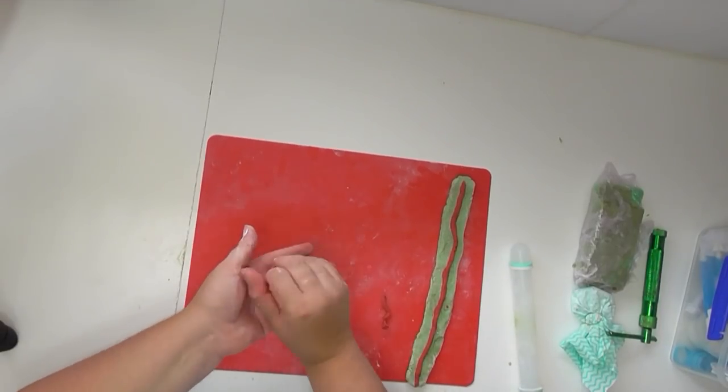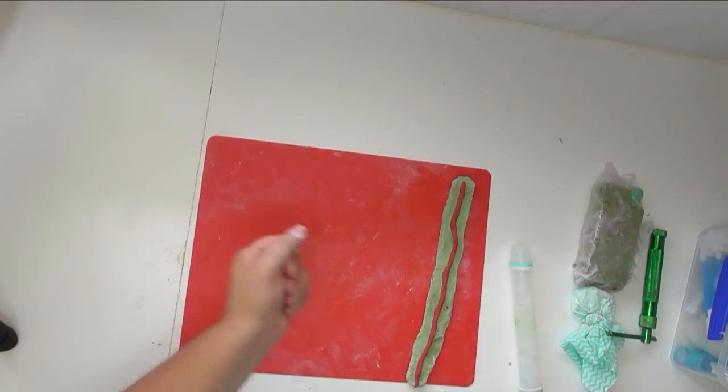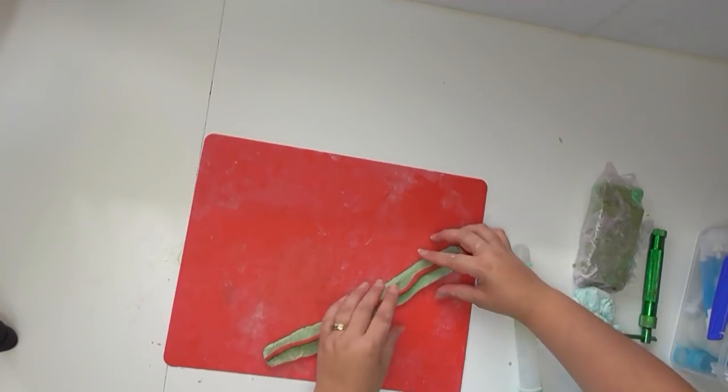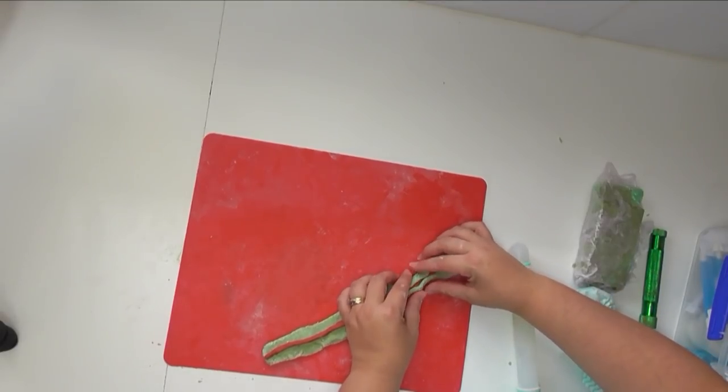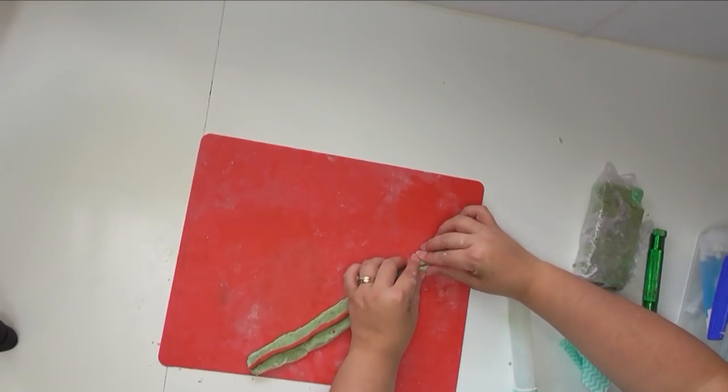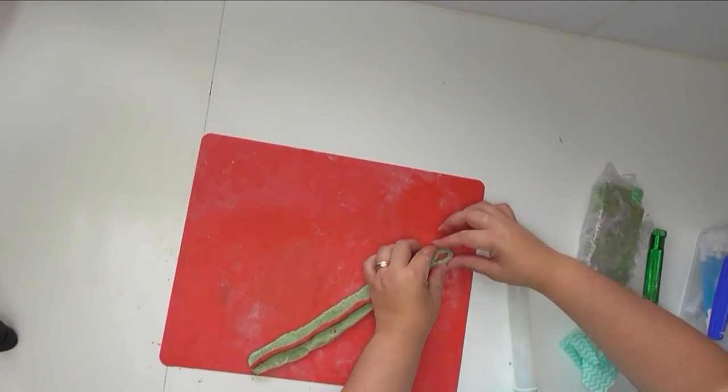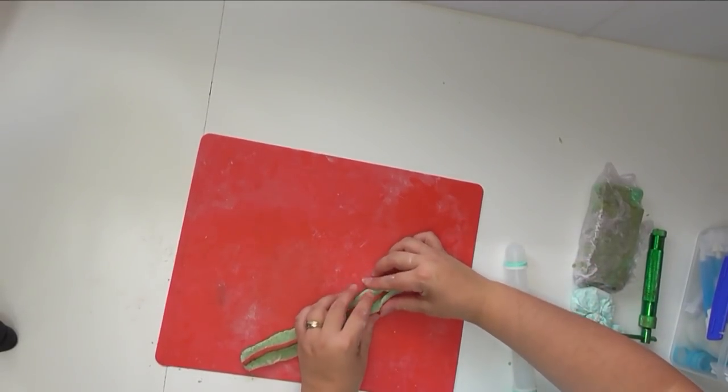And now what I'm going to do is I'm going to actually go and pop that back in its bag so it doesn't dry out on me. Now with this piece, I am going to roll it up, so I'm just bringing the sides up and around that red, and then I will give it a little bit of a roll just to make sure that it is all nice and smooth.